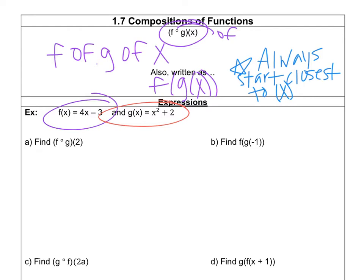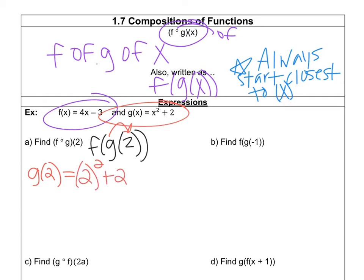So A says find F of G of 2. You can leave it like that, or you could write it as F(G(2)) with parentheses — either way, it's the exact same thing. We're going to start with the G equation because it's closest to the x or to the input. So I'm going to input a 2 into the G equation for x. G of 2 equals — everywhere I see an x in the G equation I'm replacing it with a 2 — so that would equal 2 squared plus 2. Well, 2 squared is 4, and then 4 plus 2 is 6. So this would equal 6.